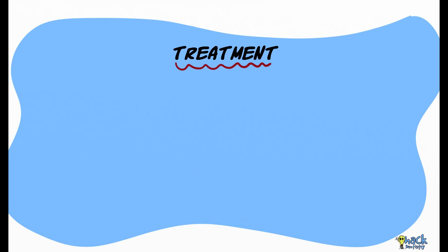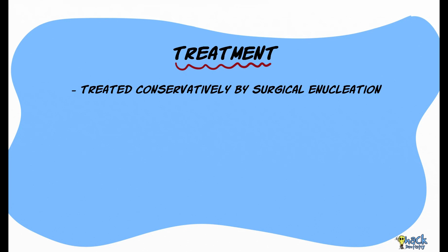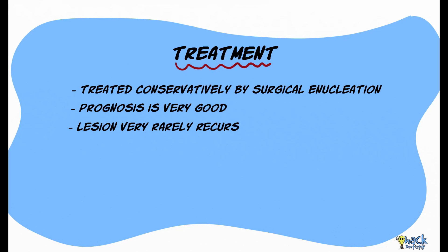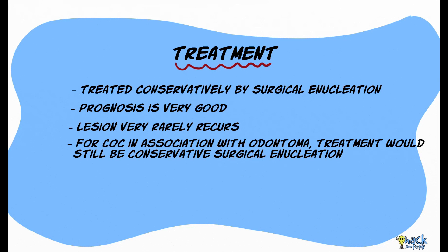As far as treatment and prognosis are concerned, Calcifying Odontogenic Cyst is usually treated conservatively by surgical enucleation, with a very good prognosis and very rare recurrence. When arising in association with an odontoma, treatment remains conservative.